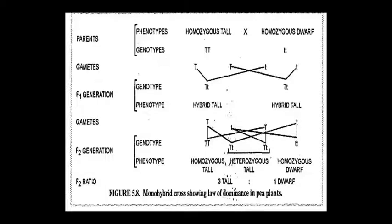For example, crossing TT (homozygous tall) with tt (homozygous dwarf): in F1 generation, all hybrid tall plants are obtained because each has one capital T and one small t. The phenotypic character is tall, and the genotypic character is Tt. When hybrid talls were crossed again, F2 generation gave both homozygous and heterozygous results — homozygous tall, heterozygous tall, and homozygous dwarf — with phenotypic ratio 3:1 (3 tall, 1 dwarf). This shows tallness gene is dominant. This monohybrid cross represents the Law of Dominance — Mendel's first law.